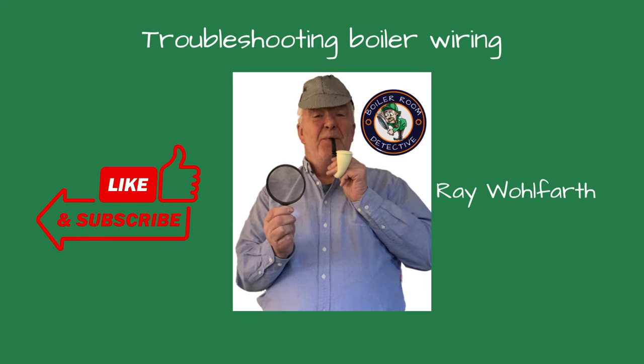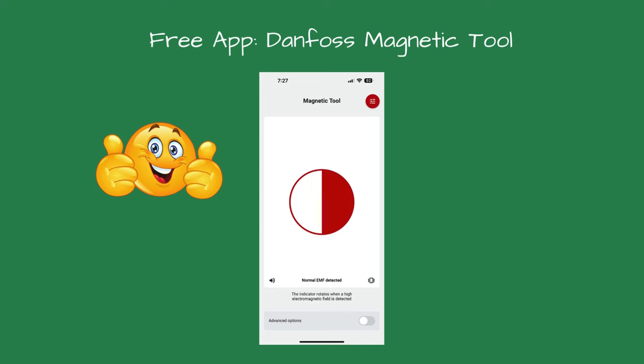If you found this video helpful, give us a thumbs up and subscribe to our channel for more expert advice and tips. Thanks for watching. Hey, I wanted to give a shout out to this Danfoss magnetic tool. It's a free app you can use on your smartphone and I use it on almost every service call. It detects electromagnetic fields, so you can use it to check to see if a solenoid valve is powered or a circulator or a pump. It works awesome and I recommend it and it's free.